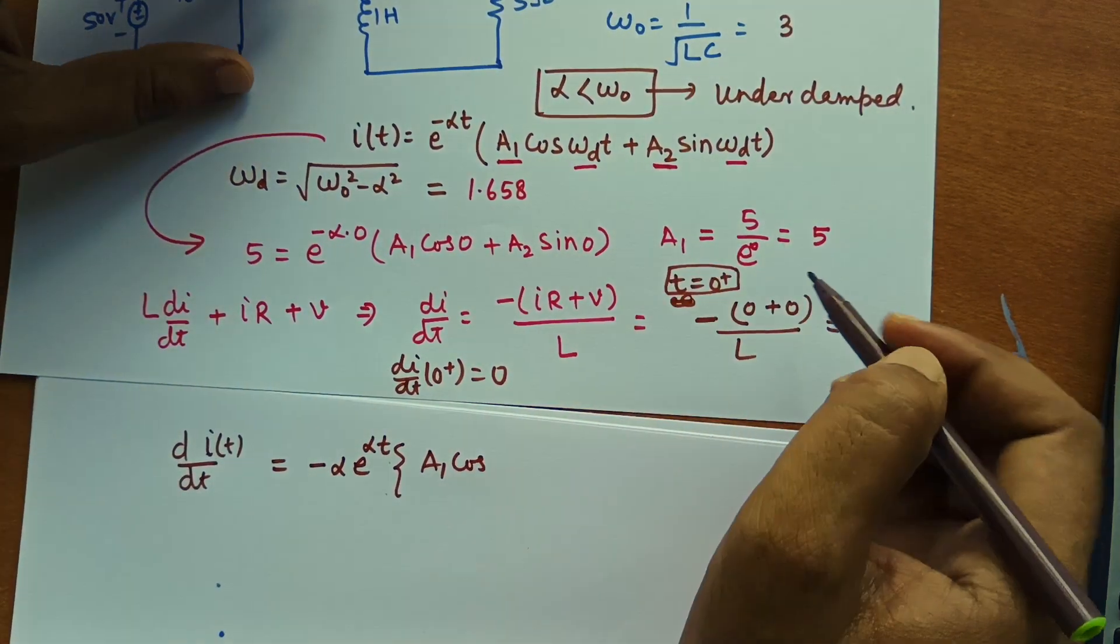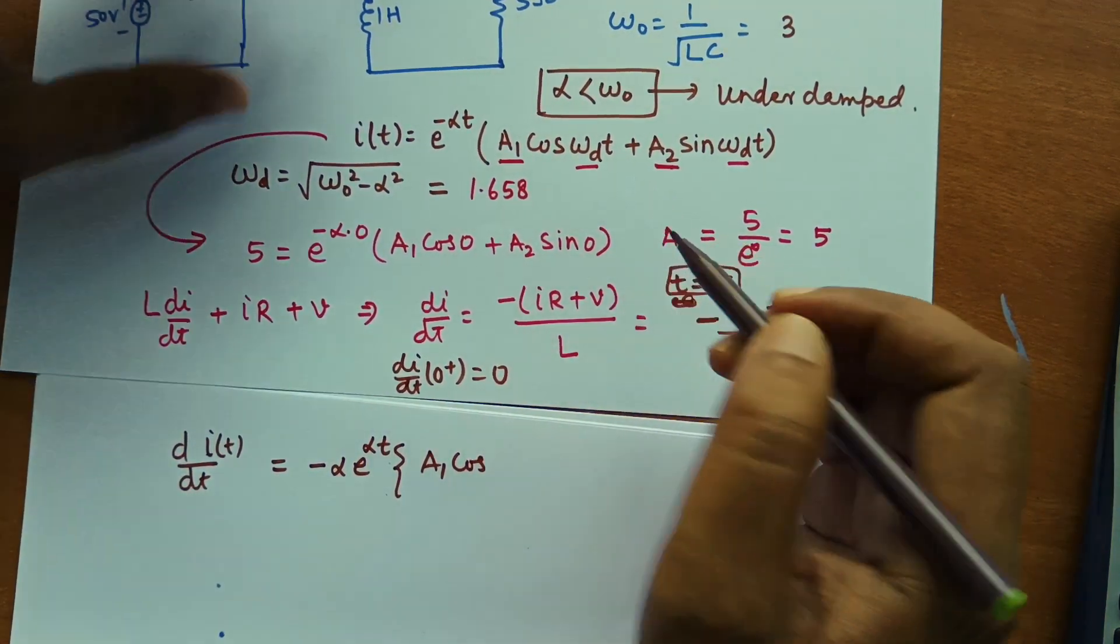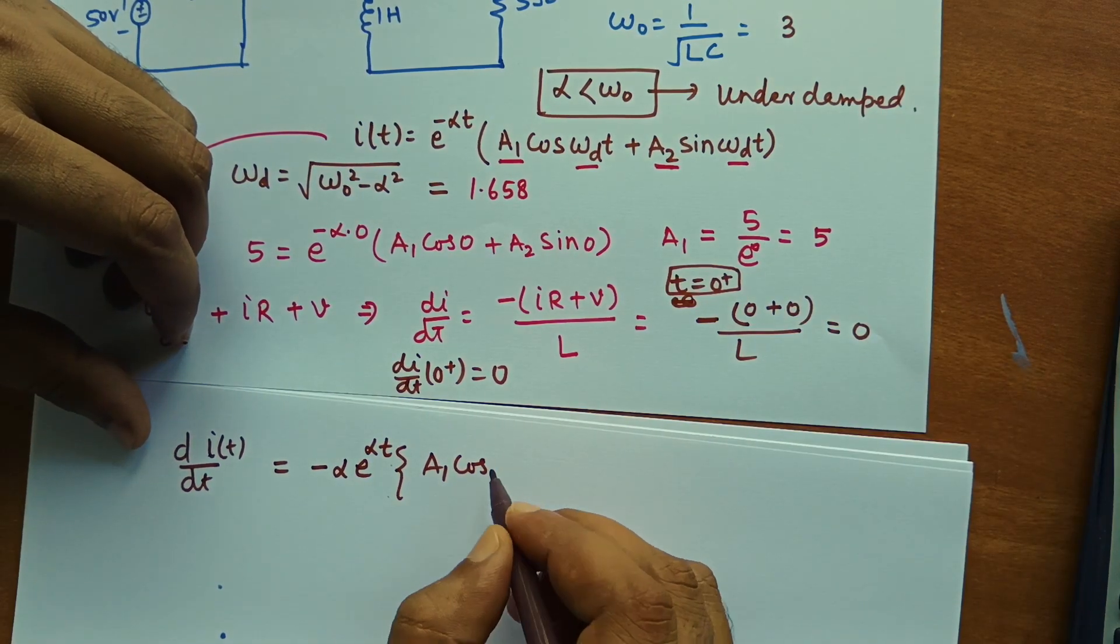Here since we have calculated a1 as 5, we need to calculate a2. Okay, we will write a1 itself as of now.